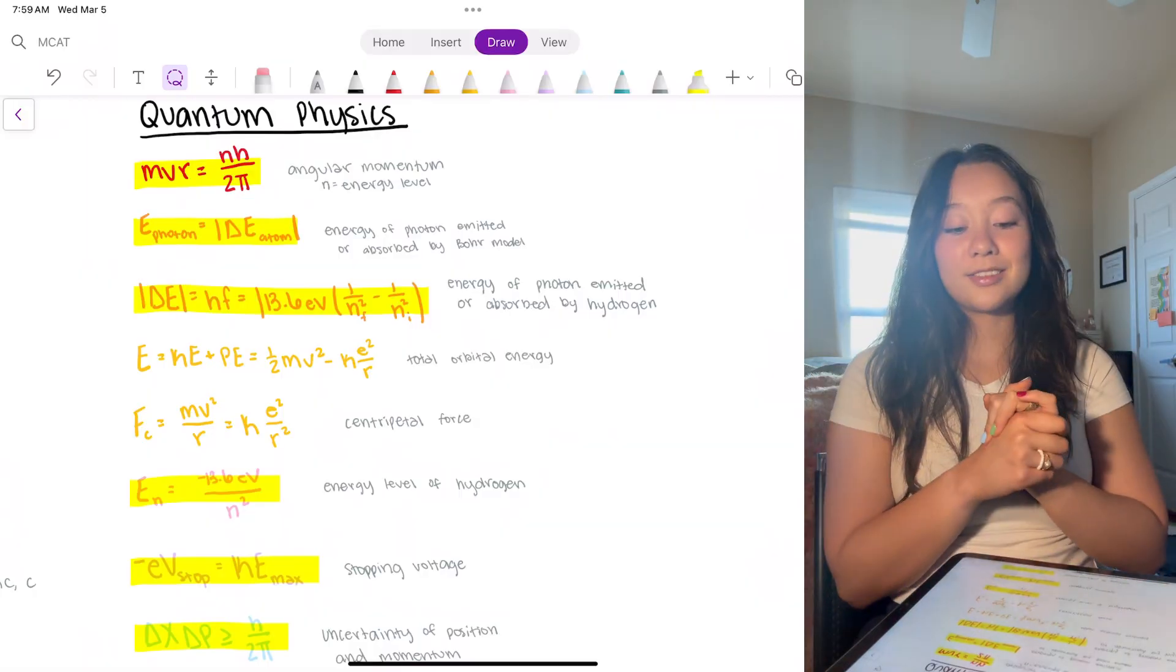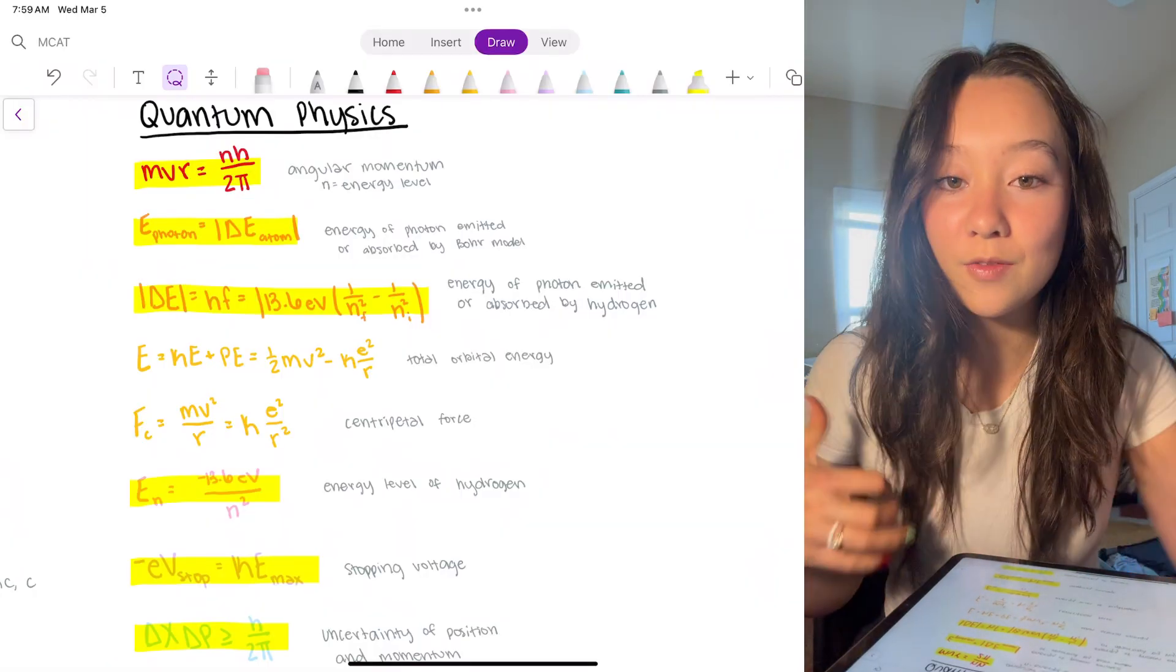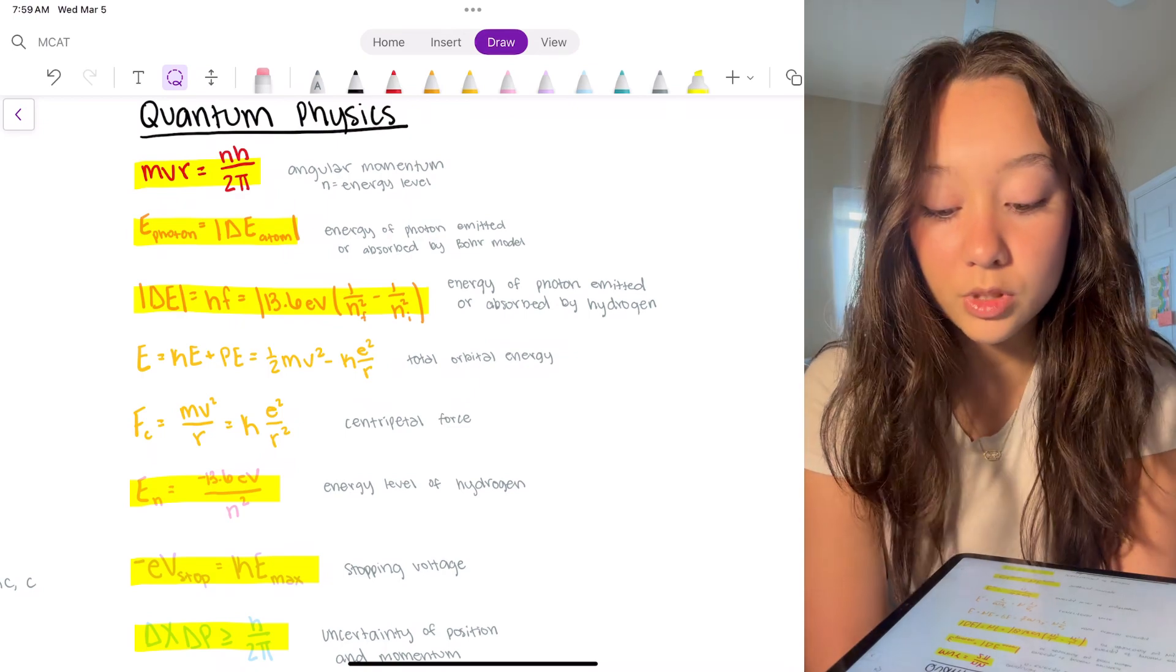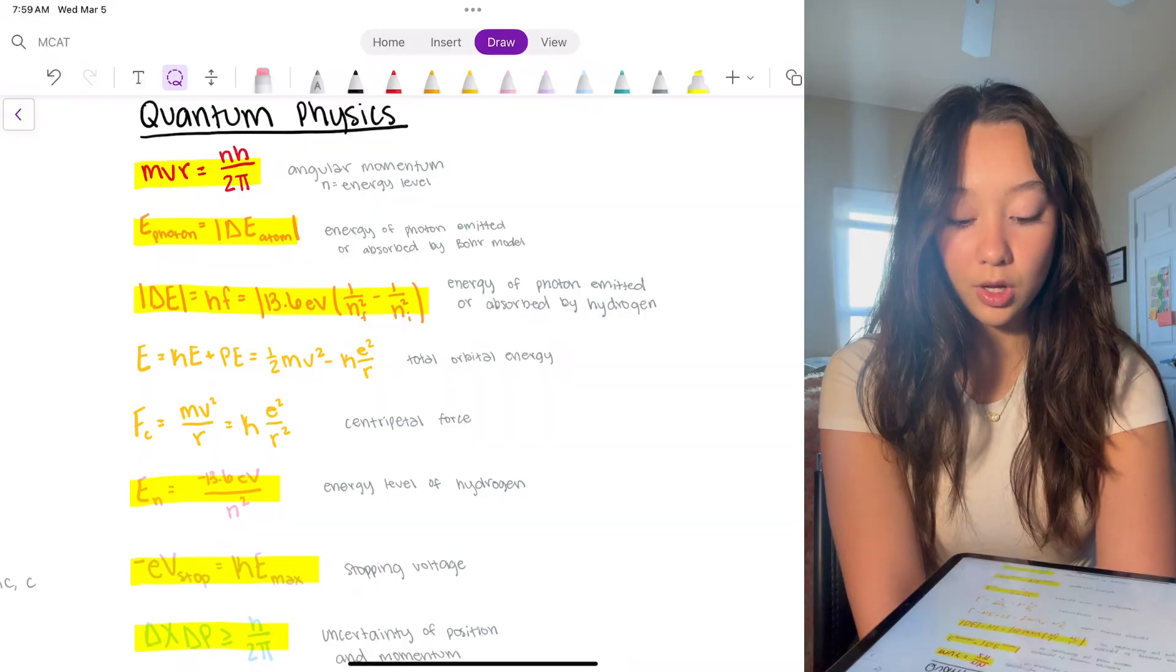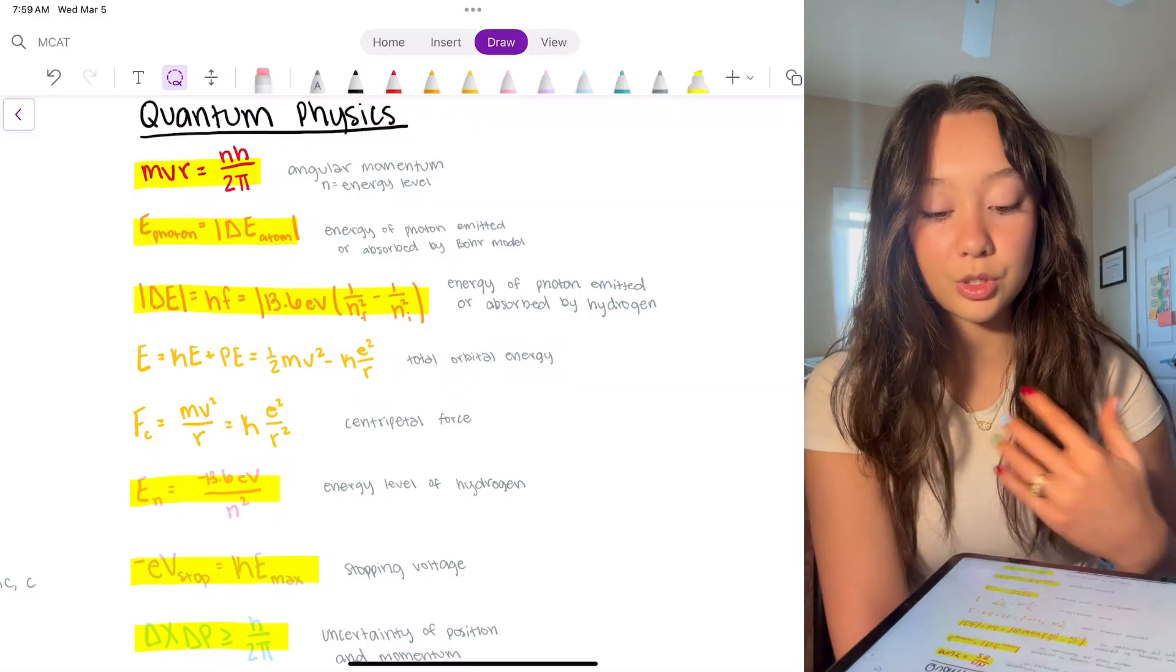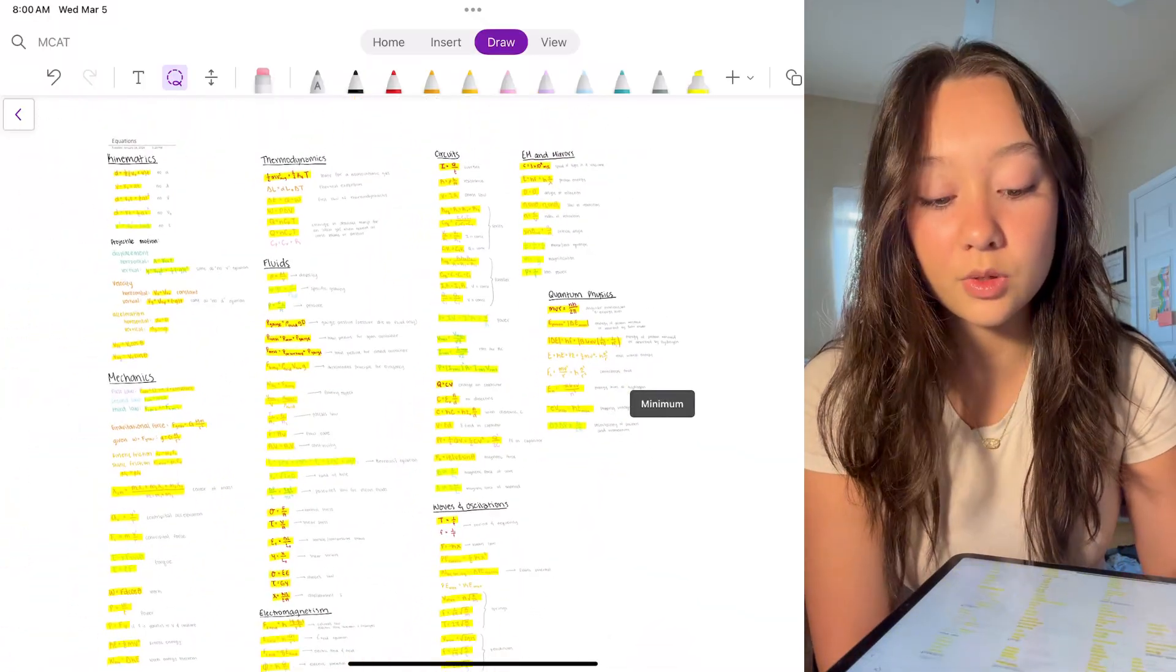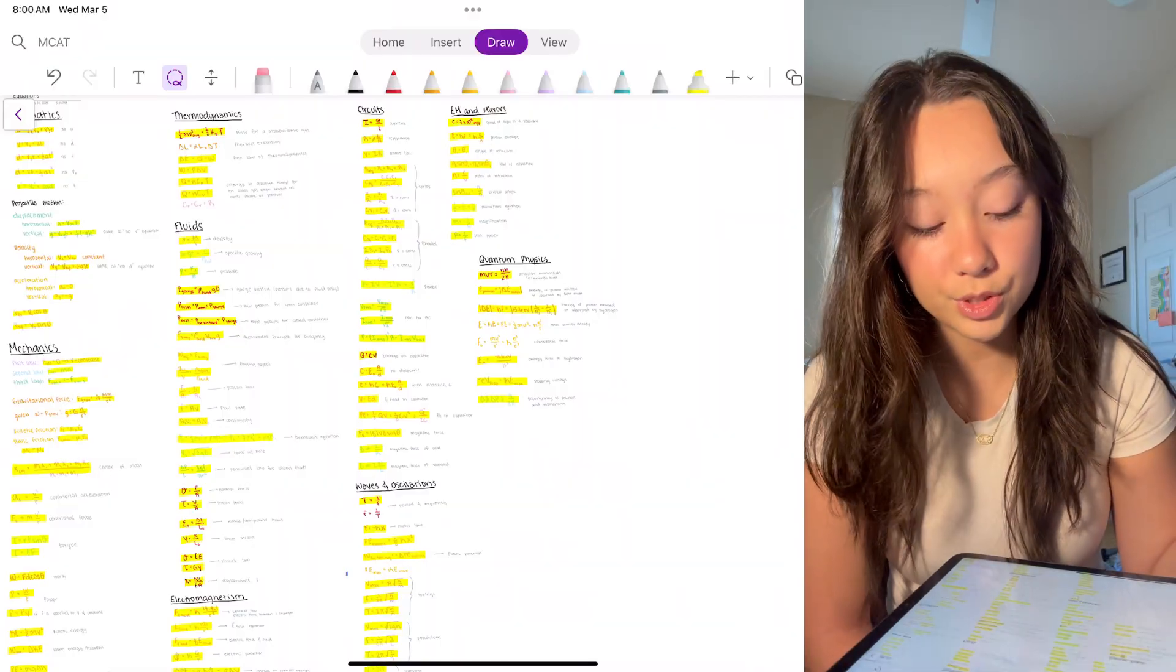Okay, last one is quantum. Again, not very high yield. If you have time and you're feeling confident and you want to make sure that you know every everything, then yes, definitely go over these. But most of these complex equations, they will definitely give to you. Mostly just talking about kinetic energy of electrons and the centripetal force of electrons, stopping voltage, uncertainty of position, all this stuff. They'll have all of these as things you need to memorize in like MCAT workbooks and stuff. But obviously, once you start doing like practice problems and stuff, you'll realize that you don't really need to know all of these, mostly just relationships.